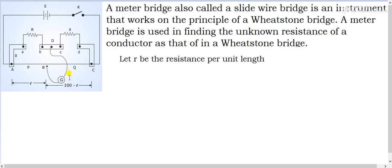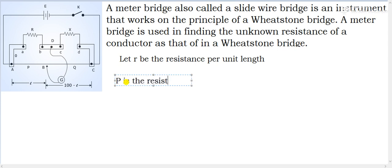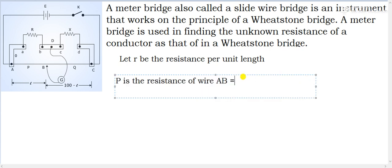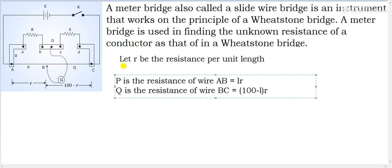Let the length AB be L, so the remaining length BC is (100 − L), since the total wire length is 100 cm. The resistance P is the resistance of wire AB, which equals L·r, since r is the resistance per unit length. The resistance Q is the resistance of wire BC, which equals (100 − L)·r.